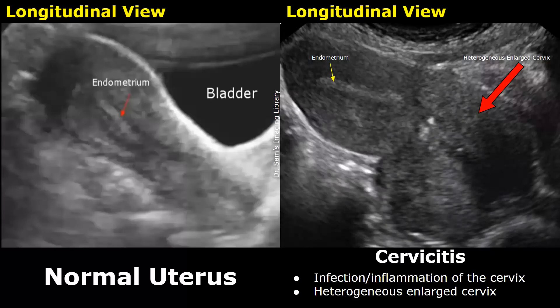Cervicitis is the inflammation of the cervix. It can be caused by infections, allergies, or irritation. On ultrasound, it may appear as an enlarged, heterogeneous cervix.